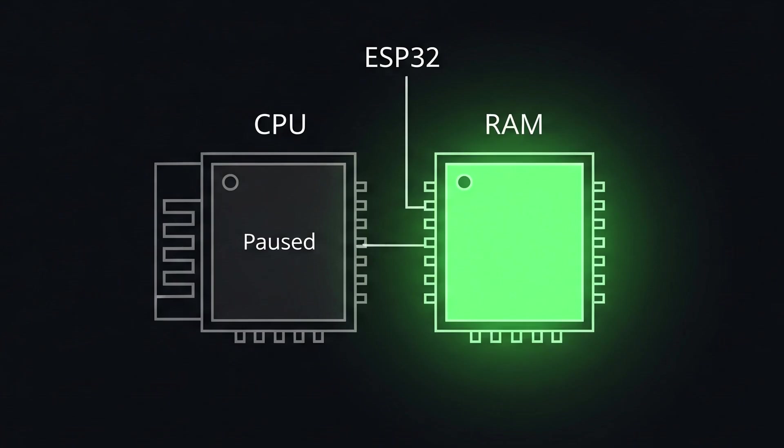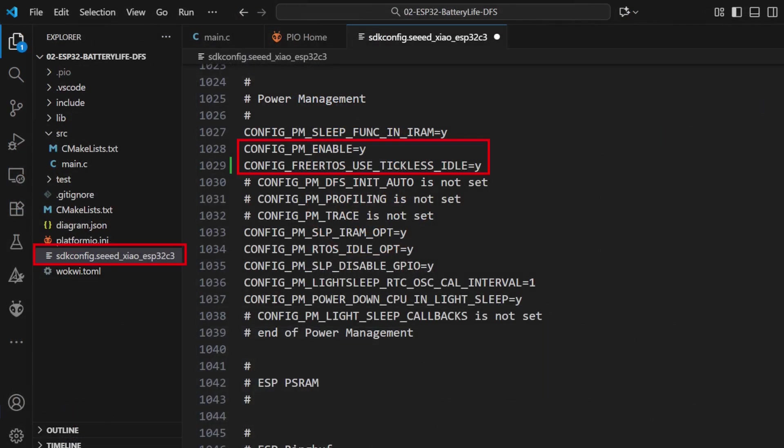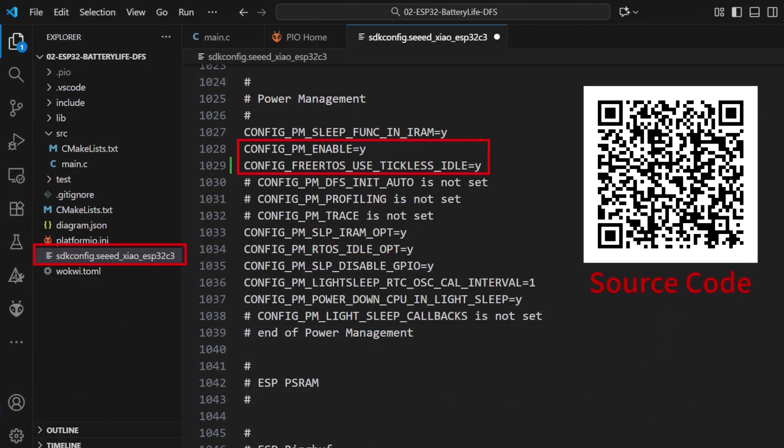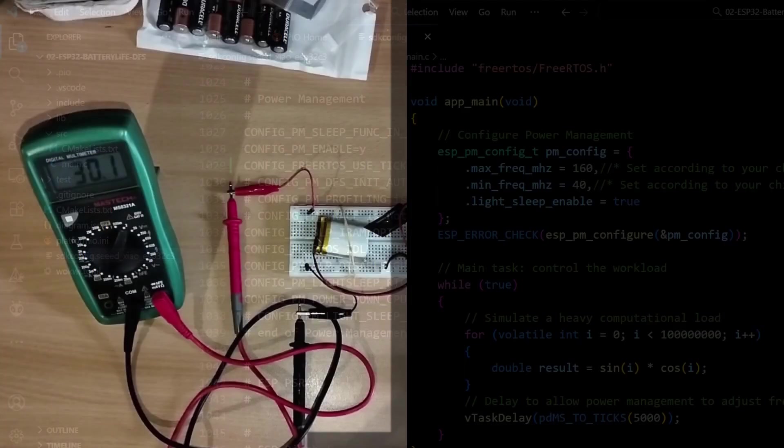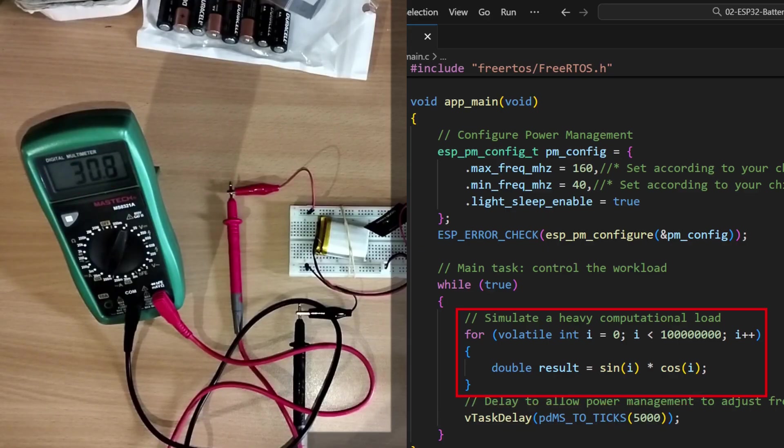Now there are two ways to do this. First the more advanced way using the official ESPIDF or Espressif IoT development framework. This is a more advanced setup using something like PlatformIO in VS Code. But the payoff is huge. By enabling a couple of settings in a configuration file the ESP32 can automatically enter light sleep during any delay. Watch this. Look at that. The current plummets during the delay without us writing a single extra line of code in our main loop. That's the power of automatic power management.